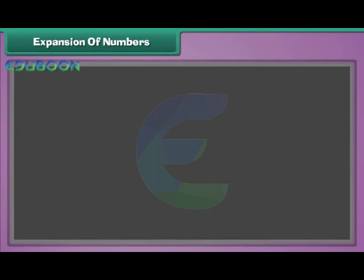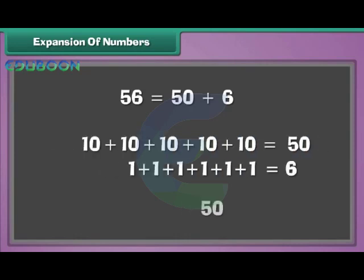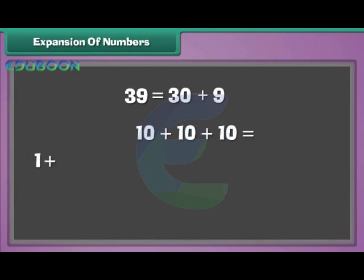Expansion of numbers. Let us break two-digit numbers into tens and ones. Fifty-six can be written as fifty plus six, meaning there are five tens and six ones in fifty-six. Similarly, thirty-nine can be written as thirty plus nine, meaning there are three tens and nine ones in thirty-nine.